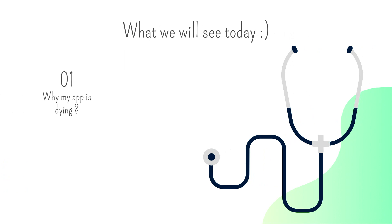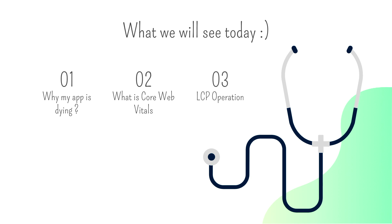So what will we see today? First, it's very important to know how and why our application is dying. And just after that, I'm going to speak about what Core Web Vitals really is, to finally focus on each metric that composes Core Web Vitals. Spoiler alert — these metrics are LCP, Largest Contentful Paint, CLS, Cumulative Layout Shift, and FID, First Input Delay.